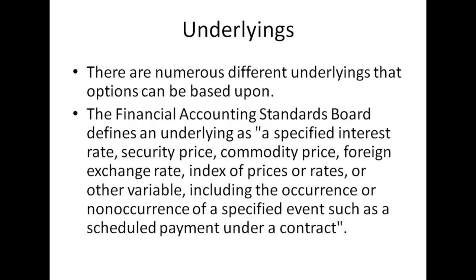There are numerous possible underlyings for options. An option can have any kind of underlying — stocks, equities, bonds, interest rates, or even other derivatives. You can have an option on a future or an option on a swap. Really, any price that's observable or tradable in the market can be the basis of an options contract.